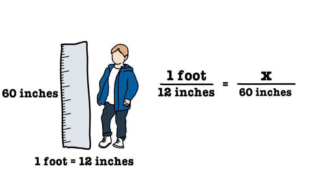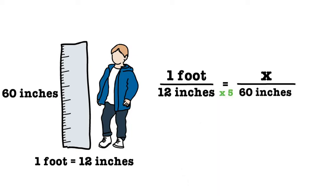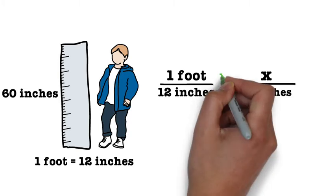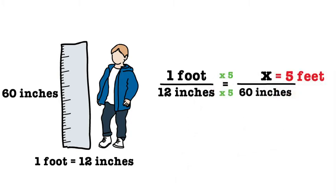If you multiply 12 by 5, you will get 60. Therefore, 5 will be your scale factor. Now you can multiply 1 by 5 to get your answer, which is 5 feet. The boy is 5 feet tall.